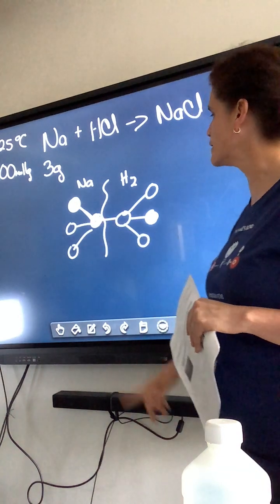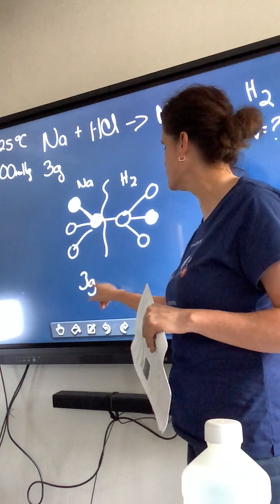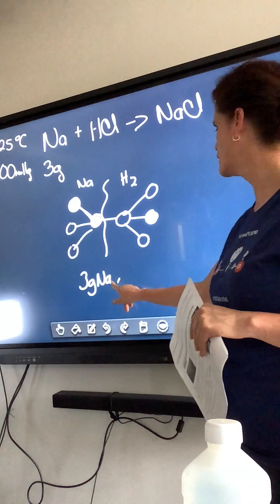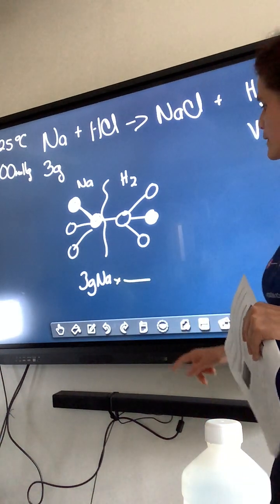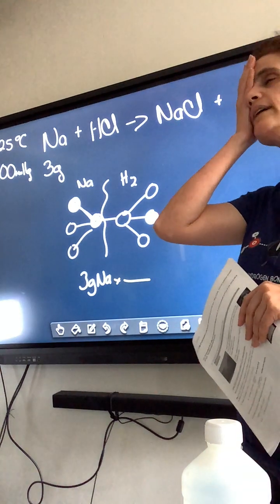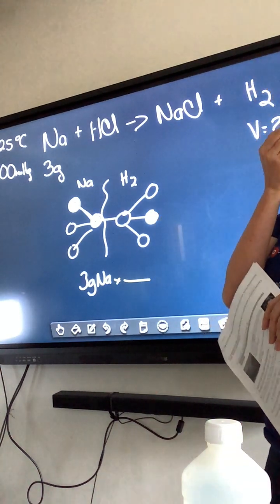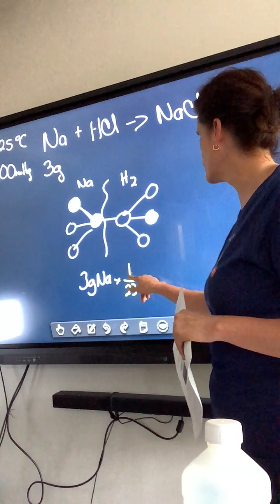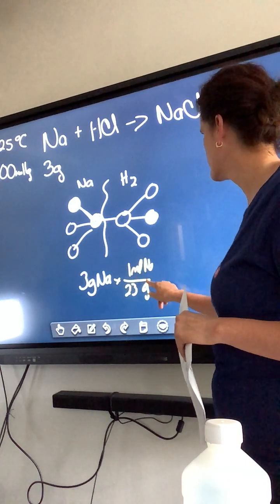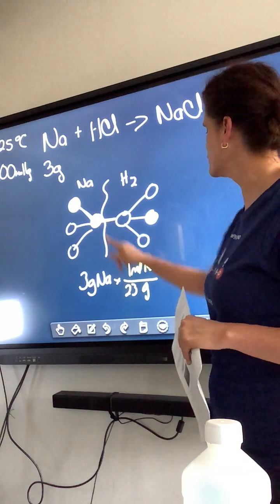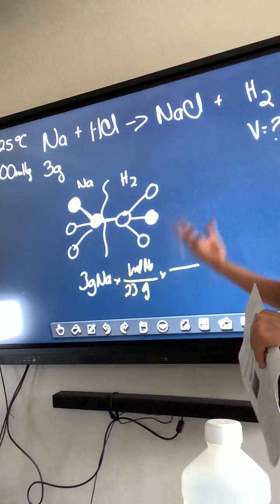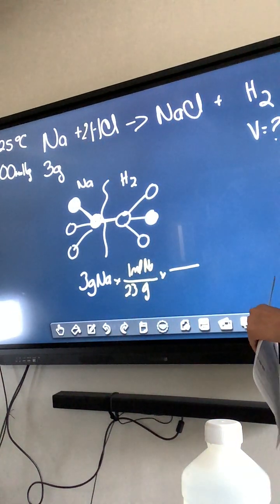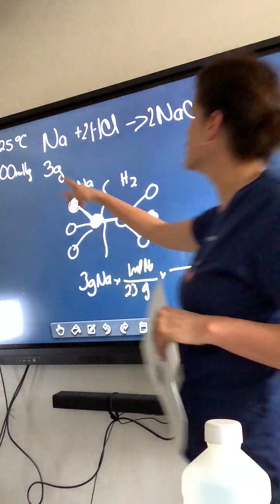That is going to be your first conversion factor. So I am going to start at 3 grams of sodium and my first conversion factor is going to be the molar mass of sodium. It's 23 grams per mole of sodium. According to this I have a second conversion factor that is the stoichiometric coefficients. Before I do that I need to balance. So I put a 2 over here.